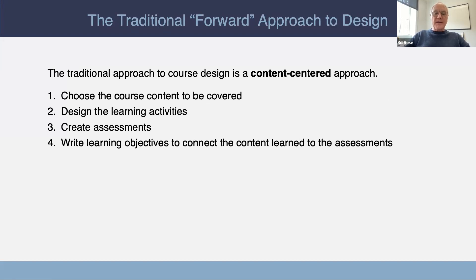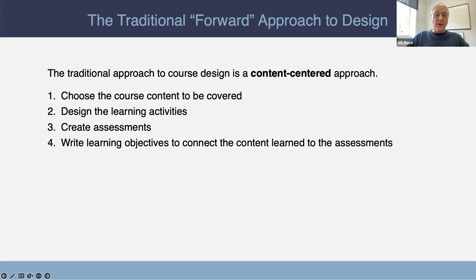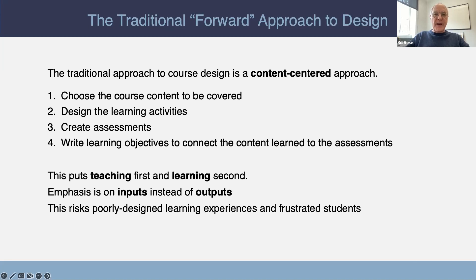The traditional approach to course design is the forward or content-centered approach. You begin by selecting the course content to be covered, whether from your own course outline or a sequence of chapters from a textbook. Then you design learning activities to help students acquire new knowledge and practice skills related to the content. Then you create assessments to determine whether students truly learned. And then finally, you write learning objectives to connect the content learned to the assessments. So what's wrong with this? There's no destination in view at the outset. There's no vision of student transformation driving that first step. Too many teachers focus on the teaching first and the learning second. The approach jumps to defining teaching inputs without first defining the learning outputs — that is, what the student will be capable of.